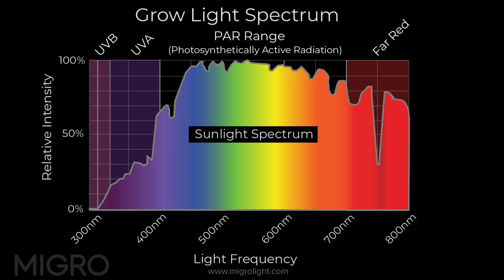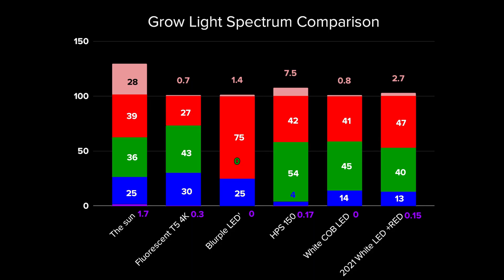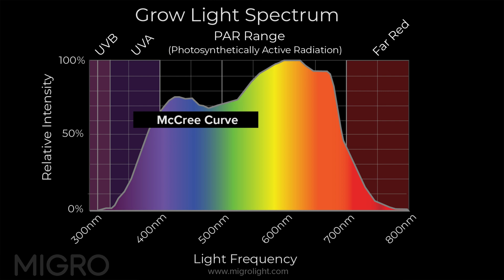It's useful to put some perspective here for people with regard to spectrum. If we take sunlight spectrum — what plants have evolved to absorb — sunlight spectrum has about 25% blue, and then about 40% green and red equally in terms of its overall composition. There is also UVB, UVA, and far red in that spectrum. But we have established through experimentation that for efficient photosynthesis, plants only really absorb the PAR range efficiently, which is from 400 to 700 nanometers.